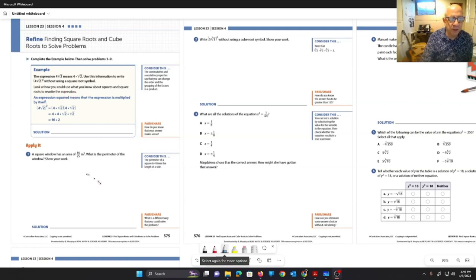So looking at page 575, in the example, 4 times the square root of 2 means 4 times the square root of 2. So write parentheses 4 times the square root of 2, parentheses squared, without using the square root symbol.